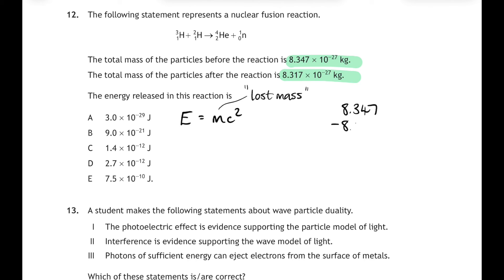Minus 8.317 and both of them are times 10 to the minus 27. That gives us an answer of 0.030, and that is times 10 to the minus 27. And if we put that into standard form it's 3 times 10 to the minus 29. And watch out because that's one of the answers, but that's the lost mass. So let's sub that in for the lost mass times the speed of light, don't forget to square it, and that will give you an answer of 2.7 times 10 to the minus 12 joules, and that's answer D.